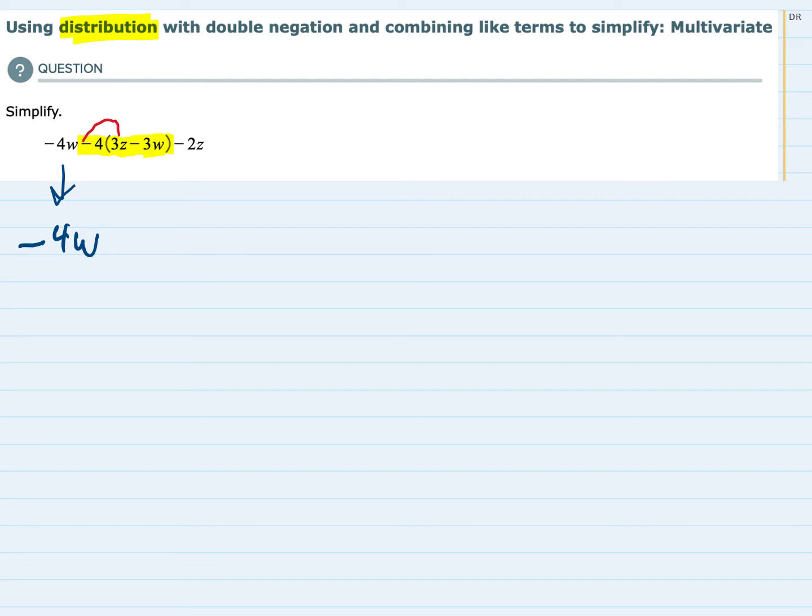Getting us started here, minus 4 times 3Z. So a negative times a positive is going to be minus. 4 times 3 is 12, so minus 12. And then we still have that Z there, so we want to make sure we don't lose the Z.